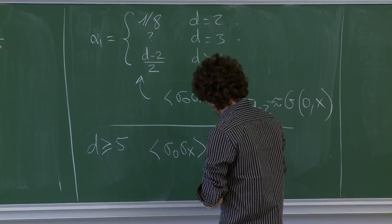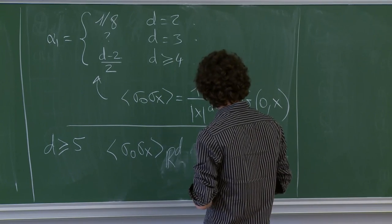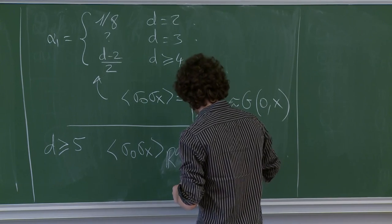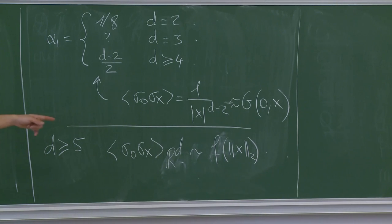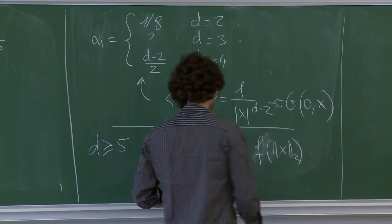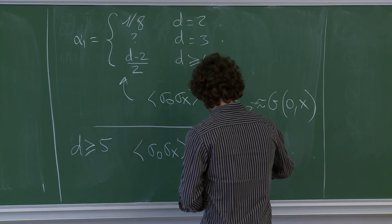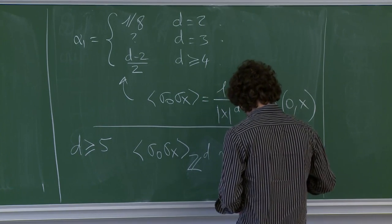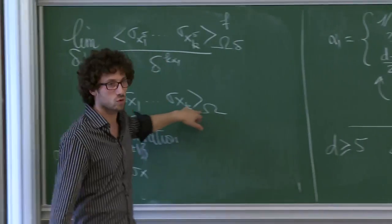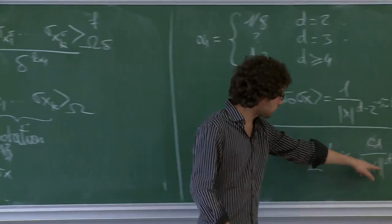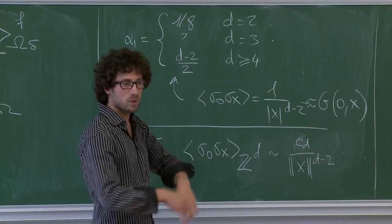En dimension 5 et plus, dans le volume infini, les corrélations spin-spin au point critique se comportent comme la fonction de Green : ⟨σ_0 · σ_x⟩_{β_c} ~ 1/|x|^{d−2}.